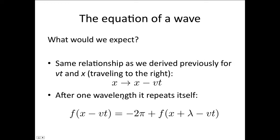We'd also expect the wave to repeat itself after one wavelength. We said that the general form for a wave was a sine function, so we're going to be taking the sine of some function of x minus vt. This function f of x minus vt is going to give some answer in radians. So we would expect that if x progressed by one wavelength — which in time would be one period — then it's going to be an additional 2π on. So we would expect the relationship: f of x minus vt is equal to minus 2π plus f of x plus lambda minus vt.